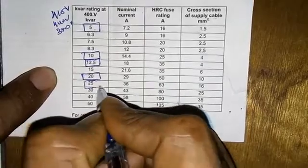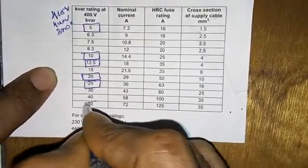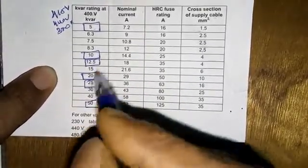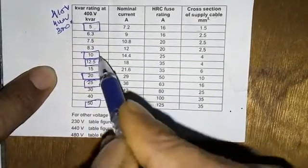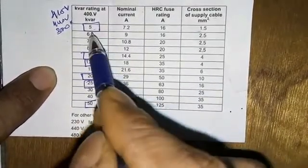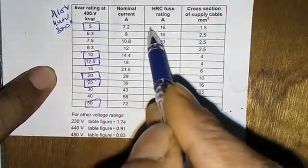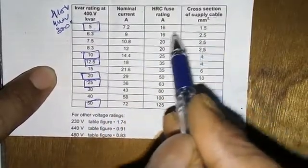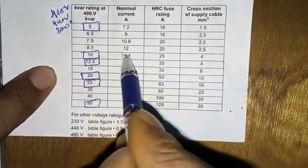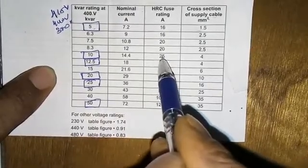Some popular capacitors we can use in the assembling are 5 kVAR, 10 kVAR, 12.5, 20, 25, and 50. These are the capacitors we always use for capacitor bank making. The 5 kVAR is 7.2 ampere with 16 ampere HRC fuse, and 10 kVAR is 14.4 ampere with 25 ampere HRC fuse for 4 square mm wire.